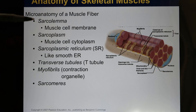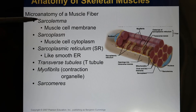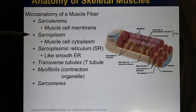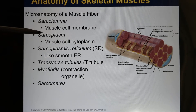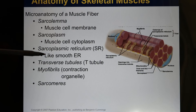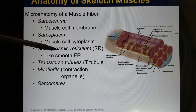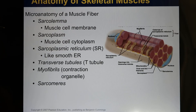This shows you the muscle fiber structure. The muscle membrane we call the sarcolemma, and the inside of the cell is the cytoplasm — in muscle we call it the sarcoplasm. In regular cells we have smooth ER; in muscle, it becomes the SR, the sarcoplasmic reticulum.